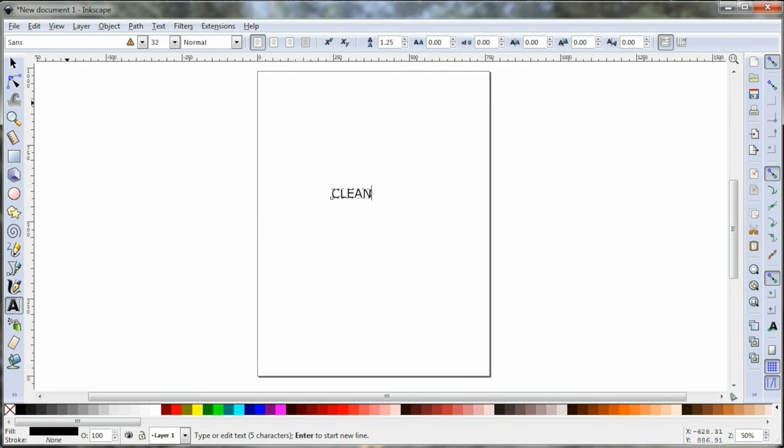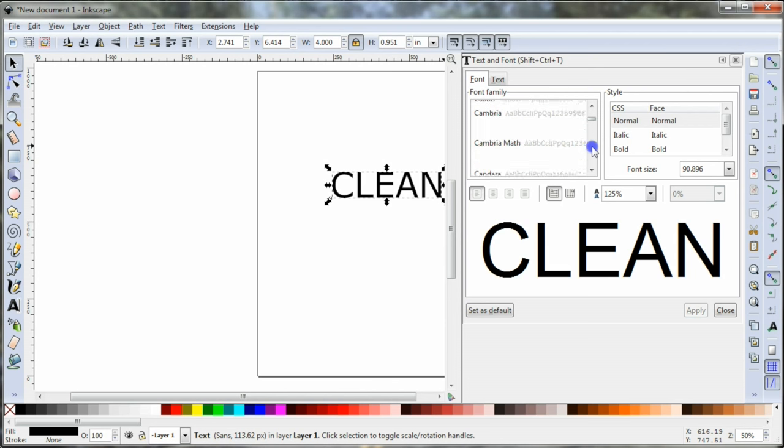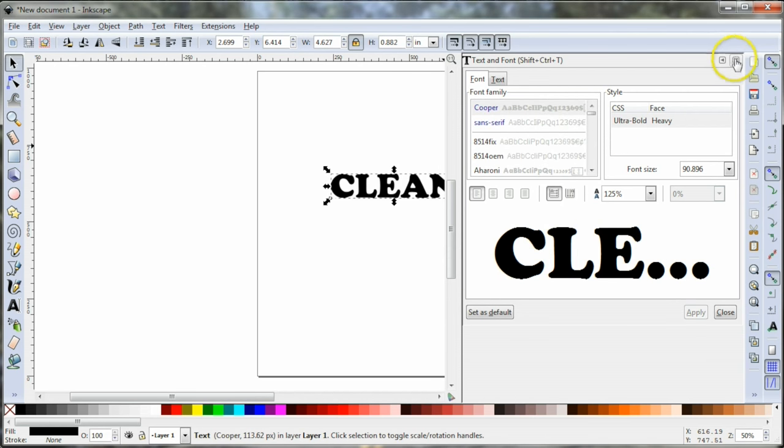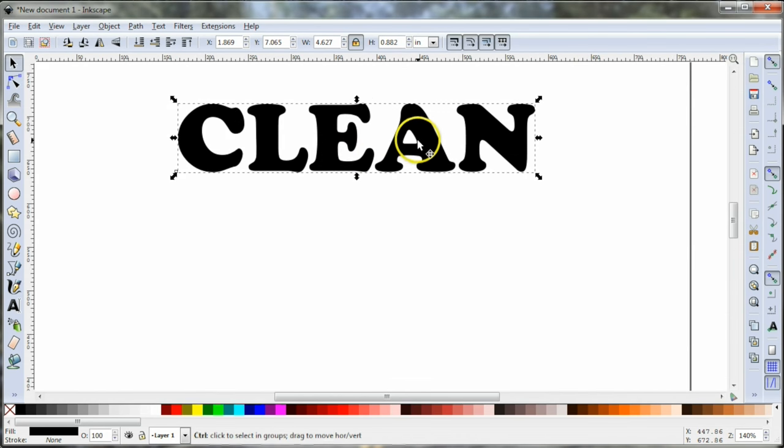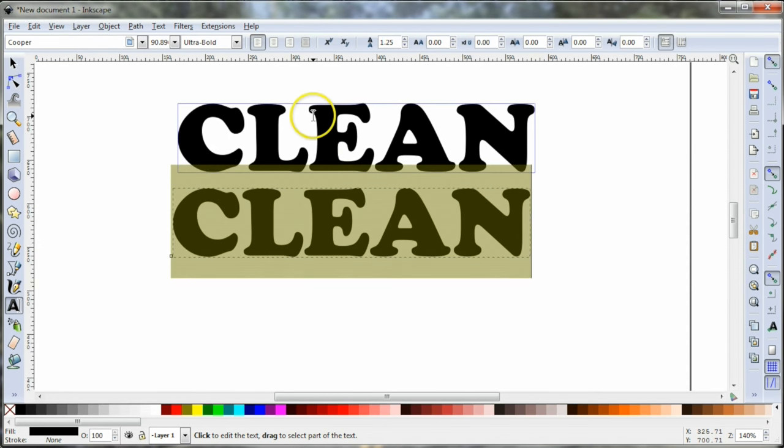So in Inkscape, I'm going to use the text tool and write out the word clean and then readjust the width so it's four inches wide. I'm going to switch the font over to Cooper and then I'm going to take the word clean and duplicate that and then change that second copy to the word dirty.